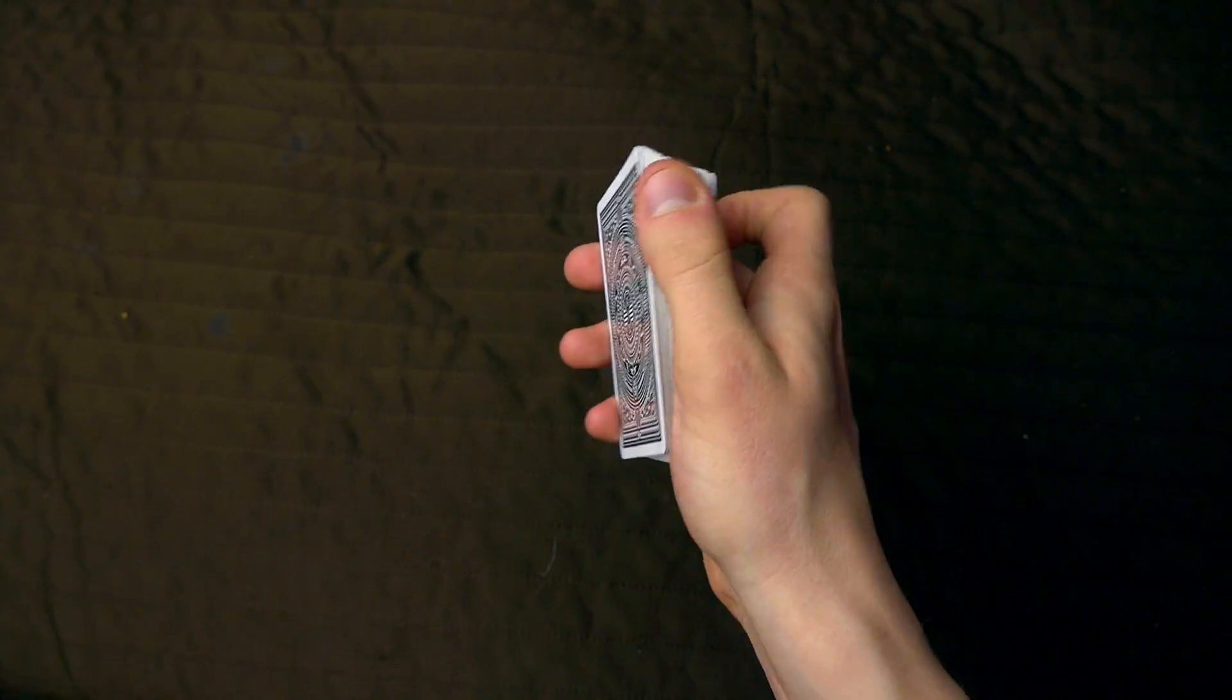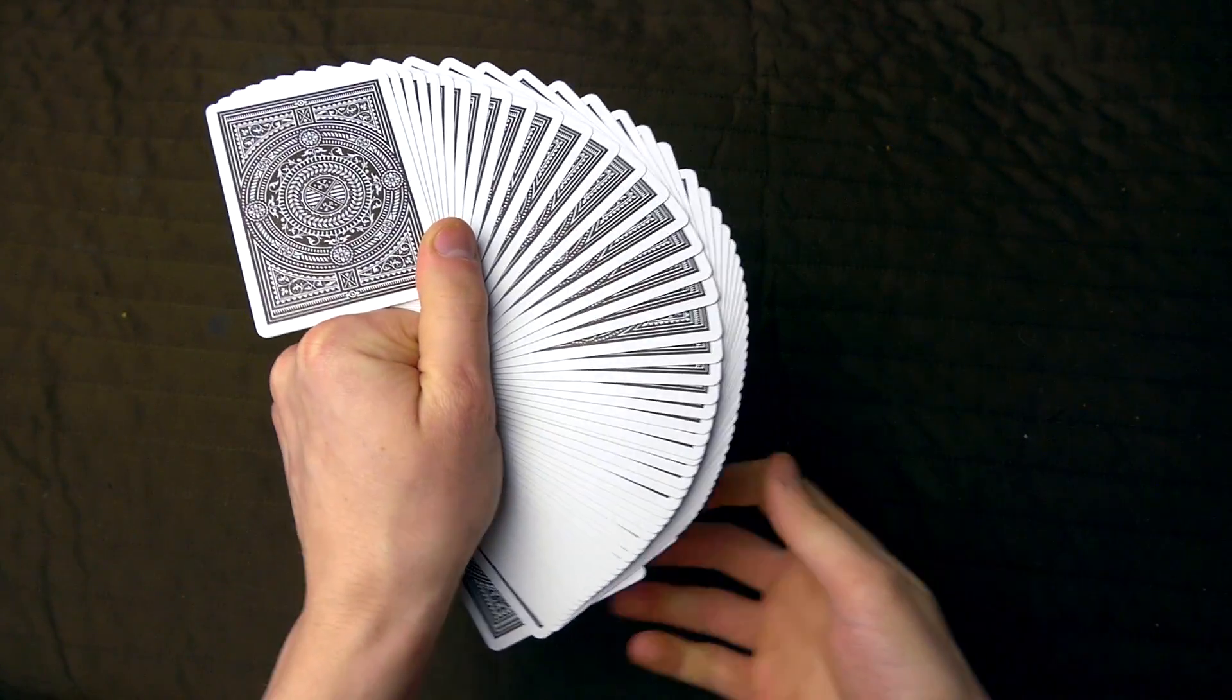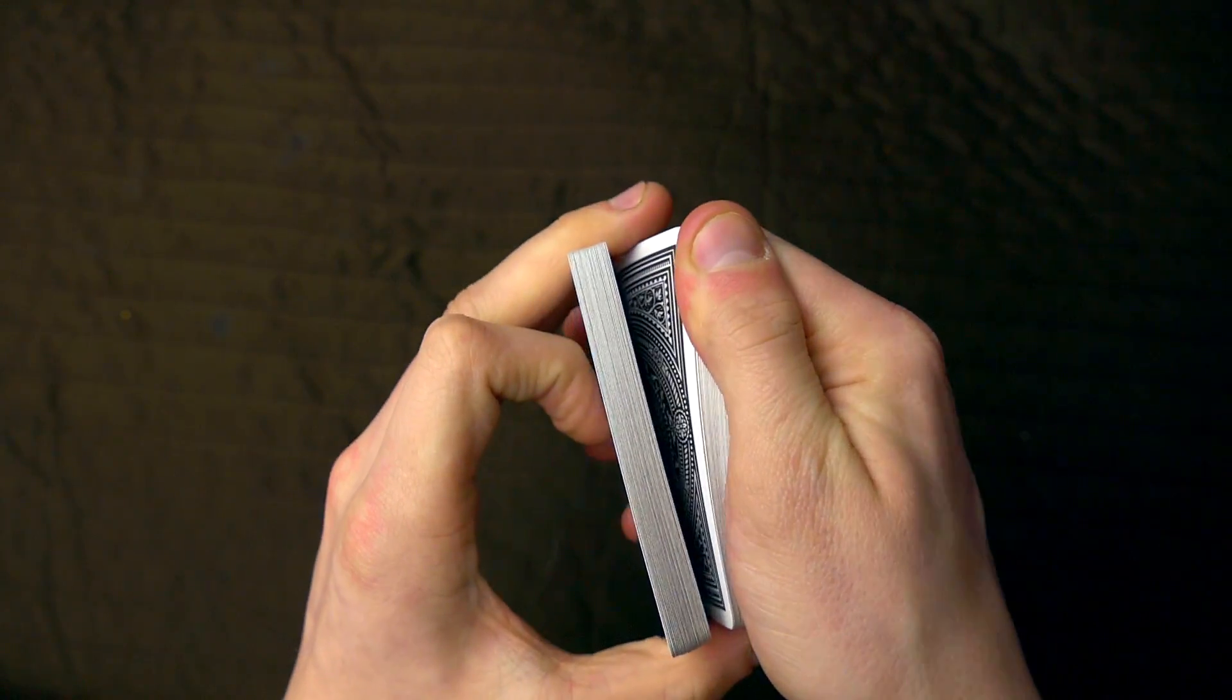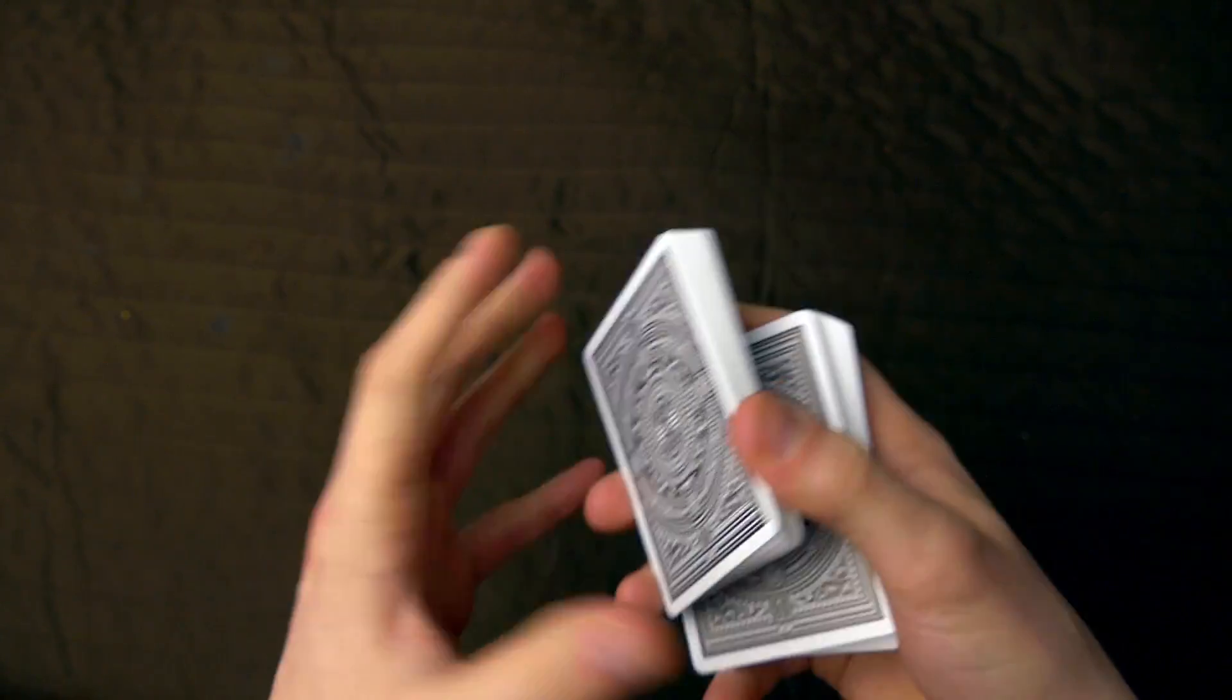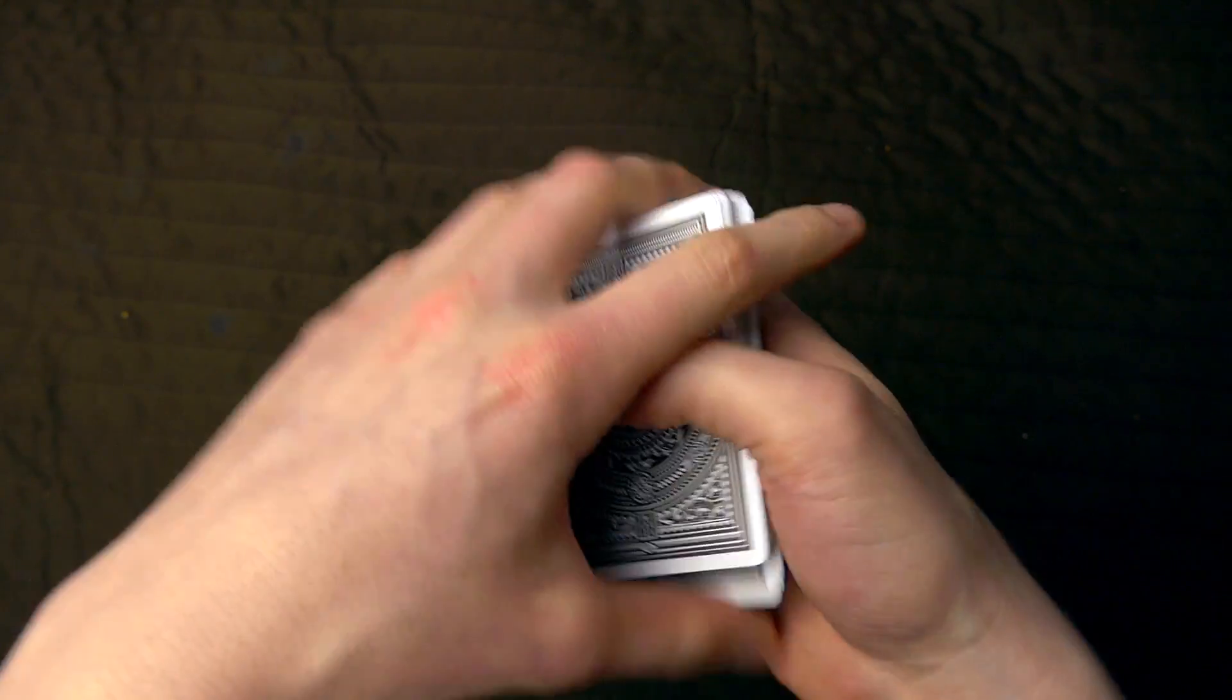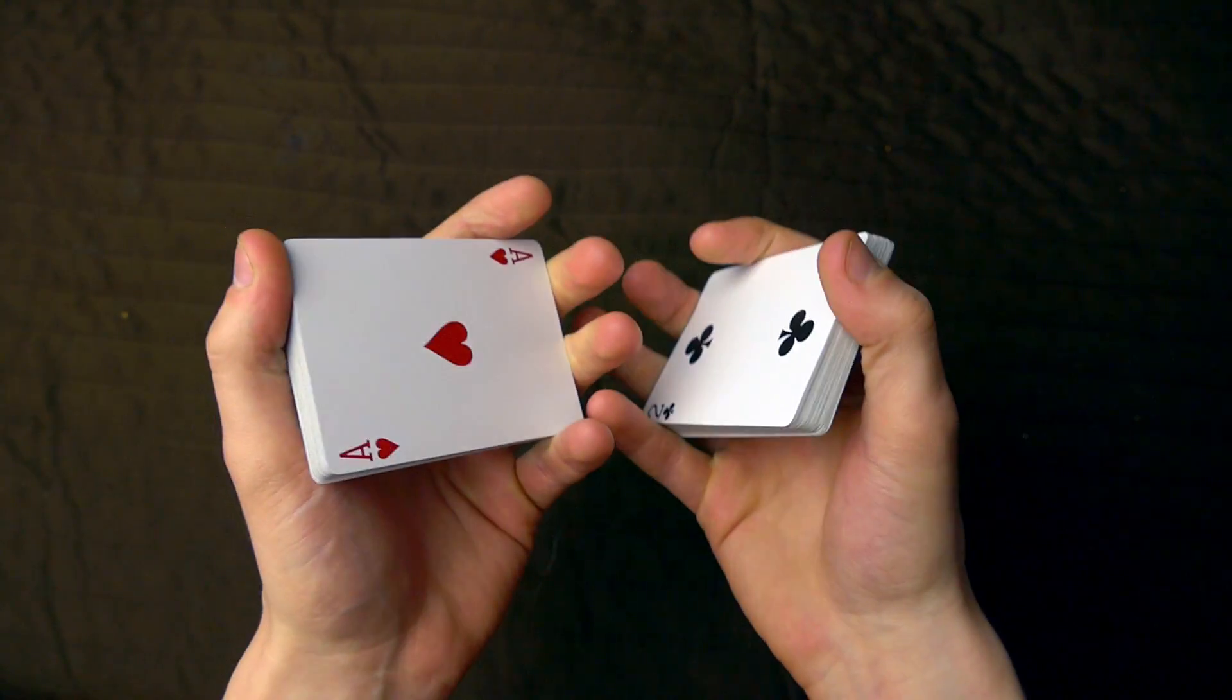So first you're going to riffle about halfway. As I said, you are of course able to do it with the entire deck, but I prefer to do it with half of the deck. So here is how this is done. You're going to hold the packet like this.